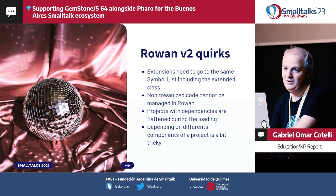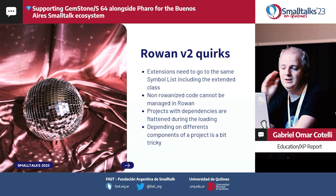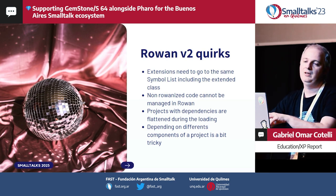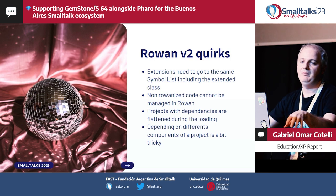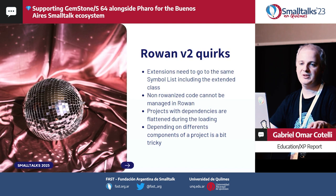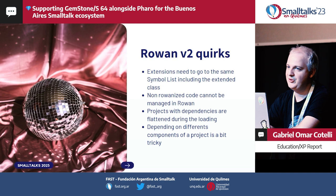Another tricky aspect: if you want to depend on only parts of another project — for example, for deployment load one subset of a dependency, and for development load a different subset — this is a bit tricky to do in Rowan.